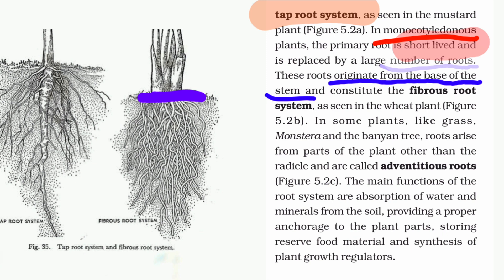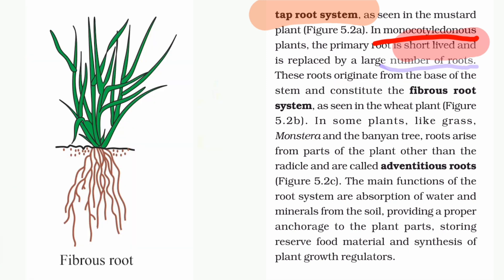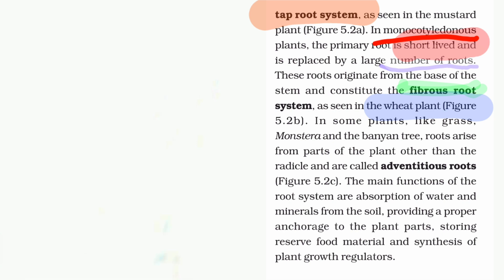The fibrous root system has many branches. For example, grass has unbranched roots in a fibrous root system. Another example is wheat, which also has a fibrous root system.